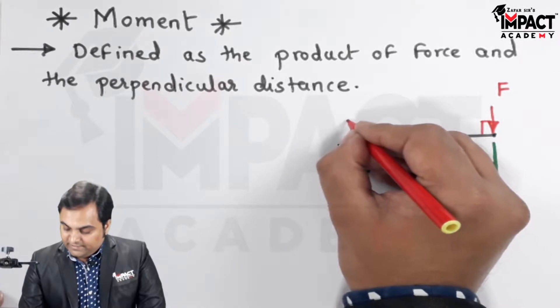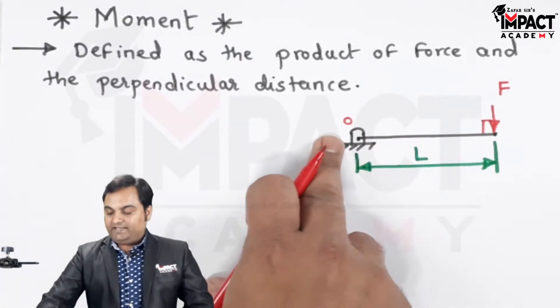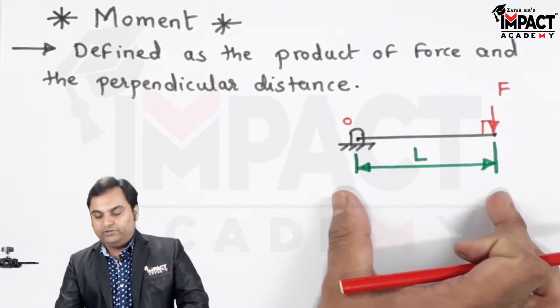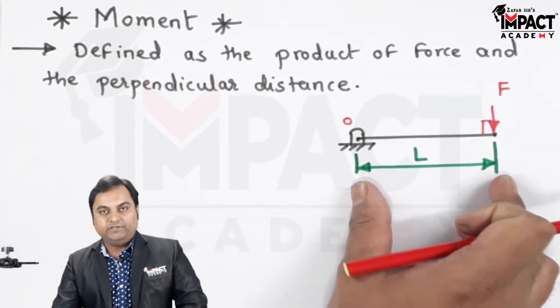When I take the moment—and here is point O—when I take the moment at point O, that would be the product of force and its perpendicular distance from the point where we are calculating the moment.